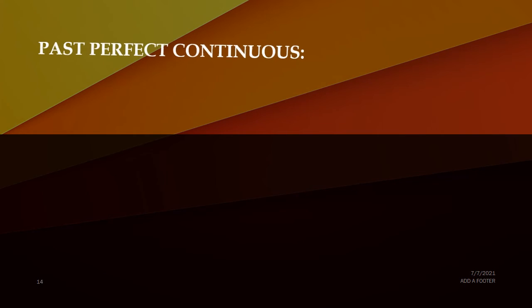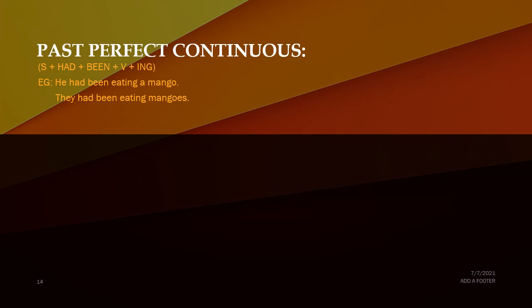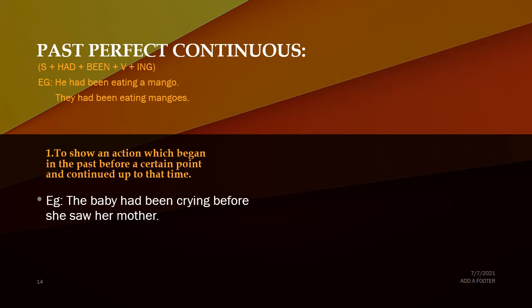Past perfect continuous tense is in the form: subject plus 'had' plus 'been' plus verb plus -ing. For example: 'He had been eating a mango', 'They had been eating mangoes' — the verb 'had been eating' remains the same for singular and plural. This tense is used to show an action which began in the past before a certain point and continued up to that point. For example: 'The baby had been crying before she saw her mother' — the baby was crying continuously until her mother appeared.